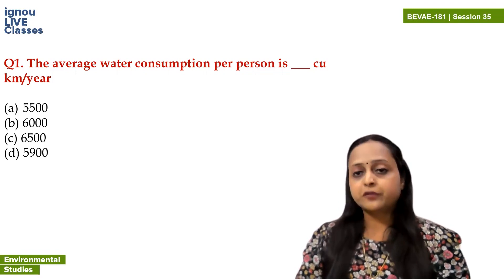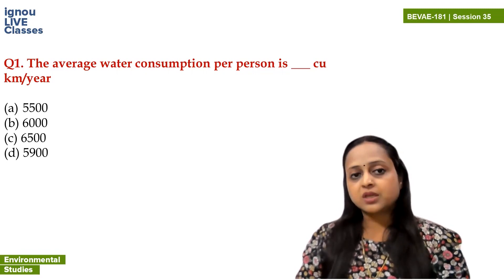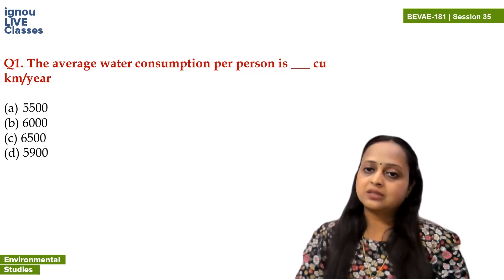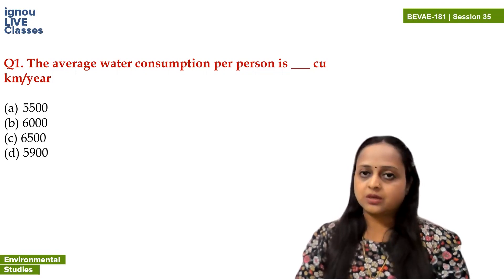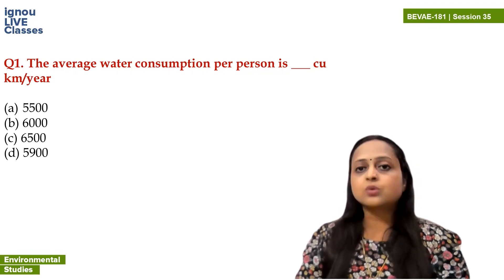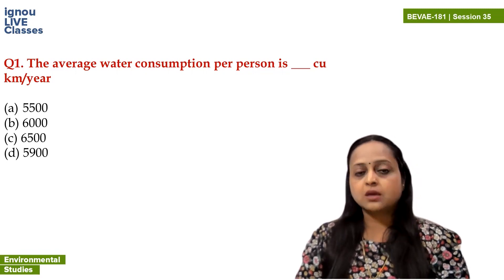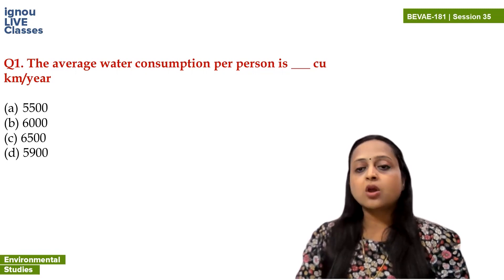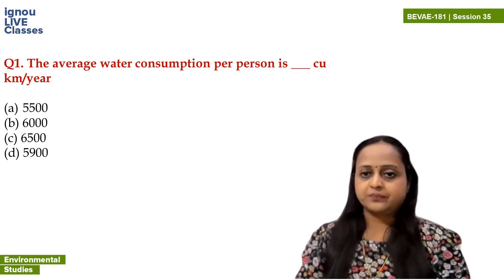The options are 5,500; 6,000; 6,500; and 5,900. The answer is 6,000. 6,000 cubic kilometers per year is the average water consumption per person.